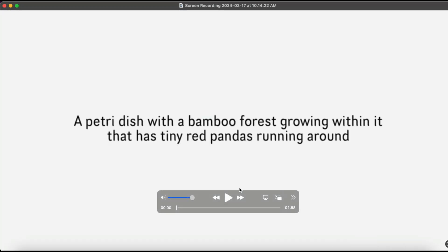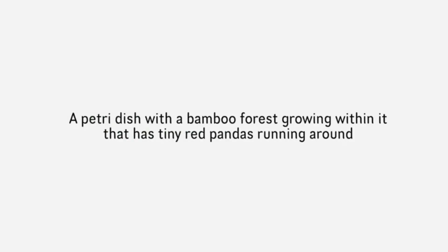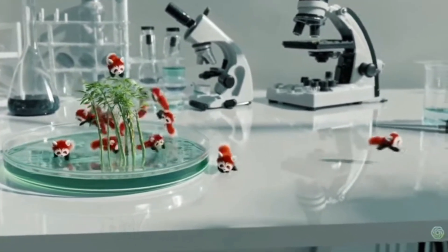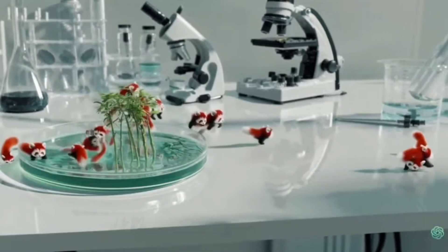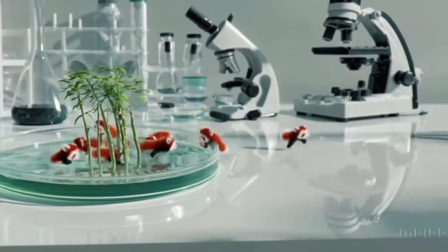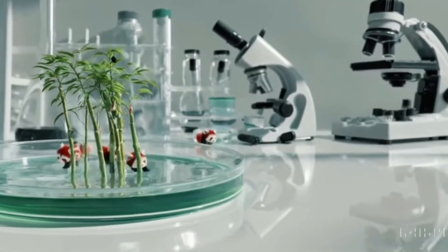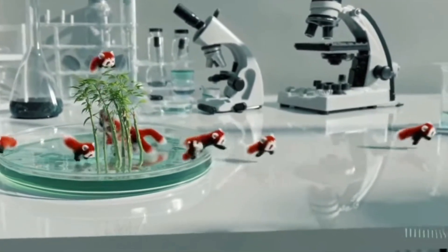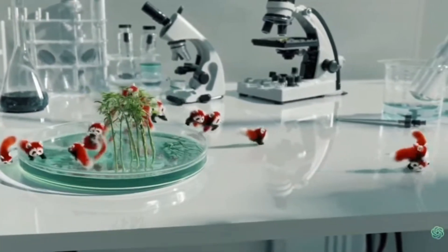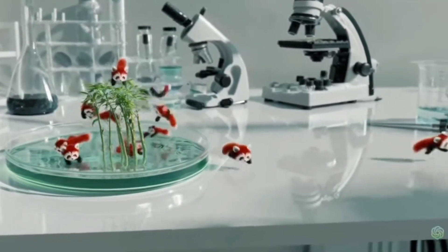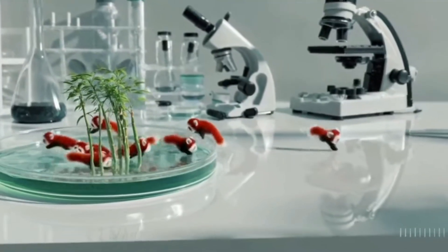To show you guys how good these videos are, let's take a look at this video of a petri dish with a bamboo forest growing within it, with tiny red pandas running around. From the onset of the video you can see it was generated completely accurately — the petri dish on the left side, bamboo in the middle, and tiny red pandas moving around, interacting with the environment. Their tiny paws are touching directly on the table, and you can see the movement of water as their little feet touch it.